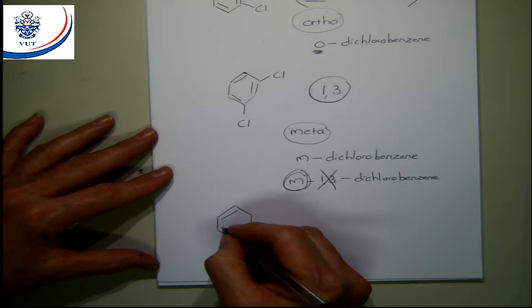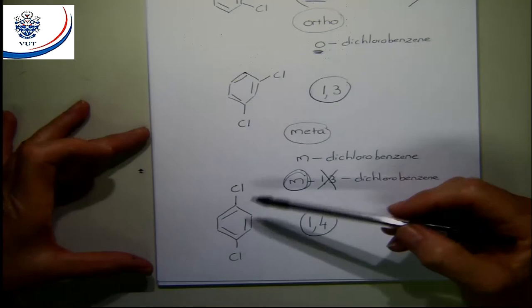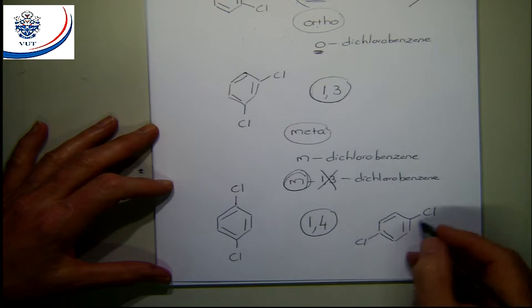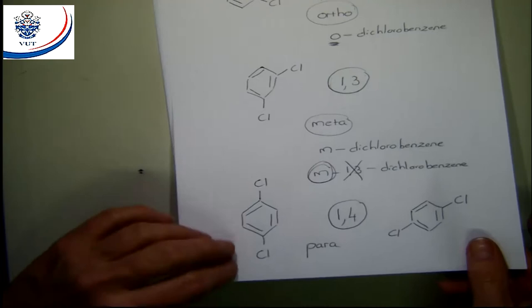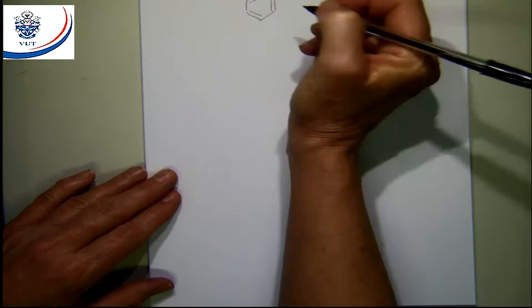If the two substituents are in opposite positions — position one and position four — we say they are in the para position, abbreviated p-. So for a disubstituted benzene, we use ortho, meta, or para to describe the relationship. Let us do some examples to see if we understand this.